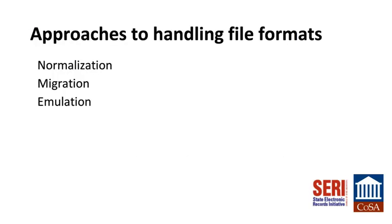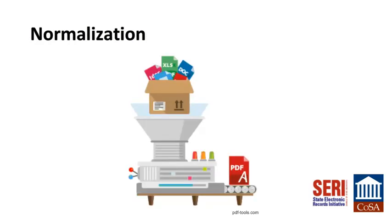We generally talk about three approaches to the long-term preservation of file formats: normalization, migration, and emulation. In all these cases, we are still maintaining the originally transferred file as evidence of what was transferred. Normalization means reducing the number of formats your institution is managing by converting files to a small number of pre-selected file formats based on standards for what format best represents the characteristics of the files. It can be achieved by limiting the number of accepted formats or by converting the files that are received — for example, different textual formats such as .doc, .docx, or .wpd can be converted to PDF-A.